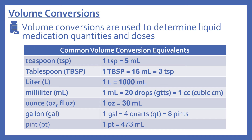Now we'll look at the volume conversions. Volume conversions are used to determine liquid medication quantities and doses. The common volume conversion equivalents in pharmacy are: one teaspoon (TSP) equals 5 milliliters; one tablespoon (TBSP) equals 15 milliliters, which also equals three teaspoons; one liter (L) equals 1,000 milliliters; and one milliliter (ML) equals 20 drops.